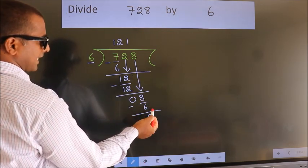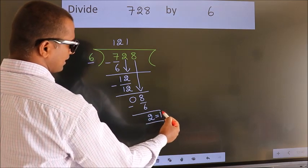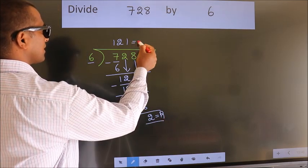No more numbers to bring down. So we stop here. This is our remainder. This is our quotient.